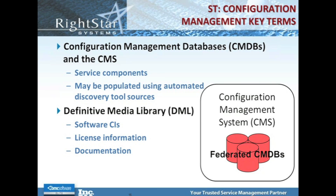A component of your CMS should be a DML, or definitive media library. The DML used to be called the definitive software library in version 2. In version 3, in addition to the actual software, it has been expanded to include licensing and documentation information. The media library is more likely today to be a storage drive or network drive containing downloadable files, or even web links to download software. You should be tracking the locations of your software. We still maintain this concept of the DML where we keep records for the source of all software licensing and documentation.